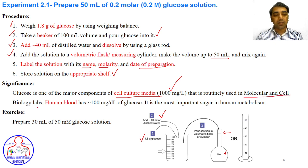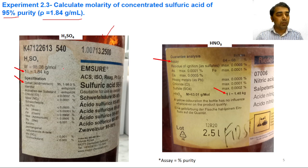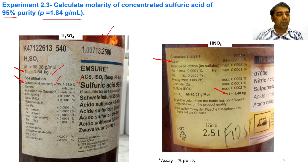Glucose is one of the major components of cell culture media in biotechnology and biochemistry. Its concentration in cell culture media is 1000 mg/L. Human blood has a concentration of about 100 mg/dL of glucose and it is the most important sugar in human metabolism. Next, we move to the calculation of molarity of concentrated sulfuric acid whose purity and density are given. The label shows the density: 1 litre equals 1.84 kg, which equals 1.84 gram per ml.